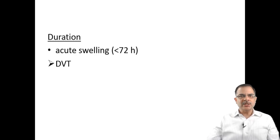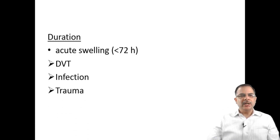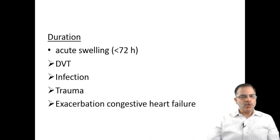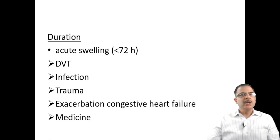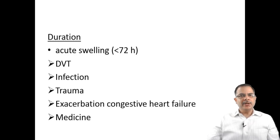The second point in history is duration. Acute swelling of less than 72 hours is mostly due to deep vein thrombosis, infections, thrombophlebitis, trauma, or exacerbation of congestive heart failure. Medicine-induced swelling is also possible — NSAIDs can reduce GFR and within days lead to swelling.